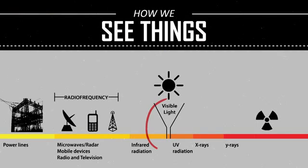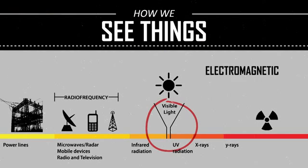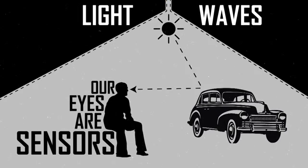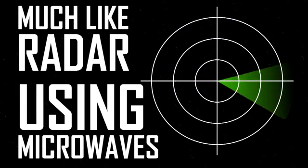We see things in the visible spectrum, a very narrow portion of the electromagnetic spectrum composed of the different wavelengths that constitute color. Light waves bounce or scatter off of an object and return to our eyes, which are effectively sensors that detect color, shape, and other features based on what scatters back to them.